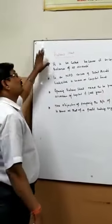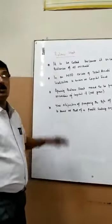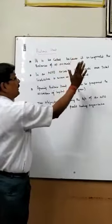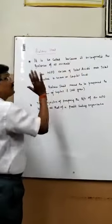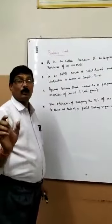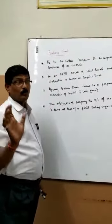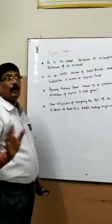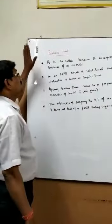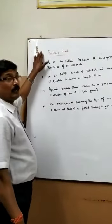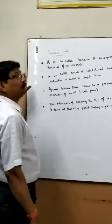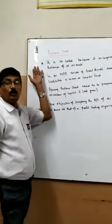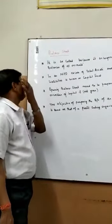Why is the balance sheet so called? The balance sheet is so called because it incorporates the balances of all accounts, except the nominal accounts. Nominal accounts are directly closed by transferring to the profit and loss account. The remaining two — real accounts and personal accounts — are to be incorporated in the balance sheet.